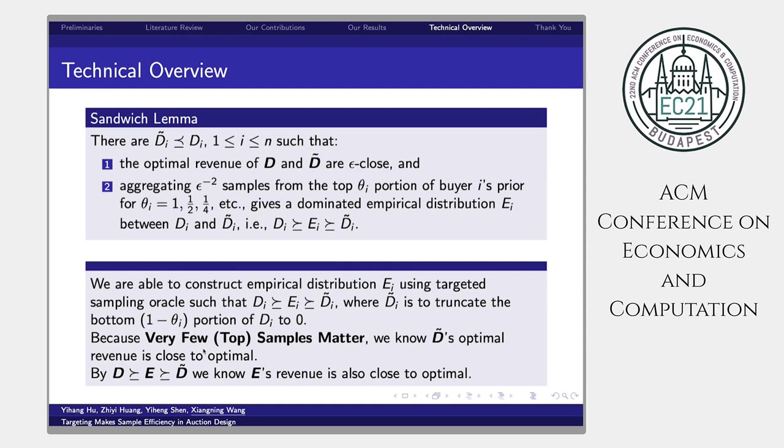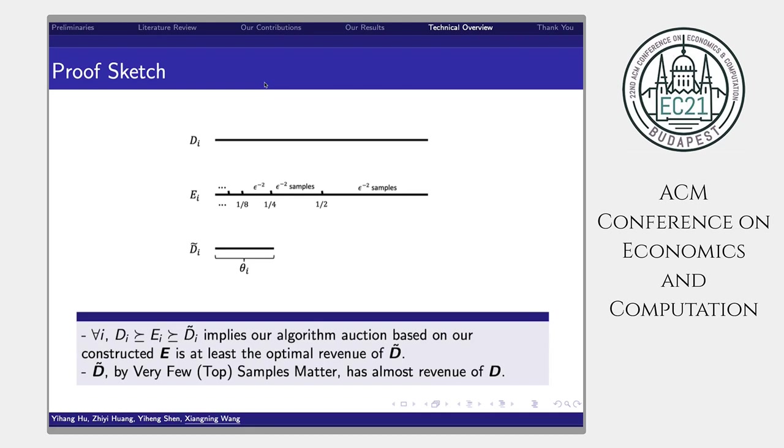Let's take a look at our proof sketch. The di, ei and d̃i are as shown in this picture. For all i, di dominates ei dominates d̃i implies our algorithm auction based on our constructed empirical distribution e is at least the optimal revenue of d̃. Then d̃, by the very few top samples matter lemma, has almost revenue of d.